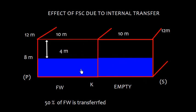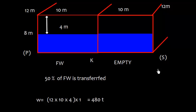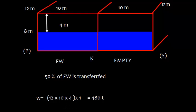The weight of the water transferred is going to be W equals 12 into 10 into 4 into 1. The weight of liquid transferred is 480 tons, which is volume into density.